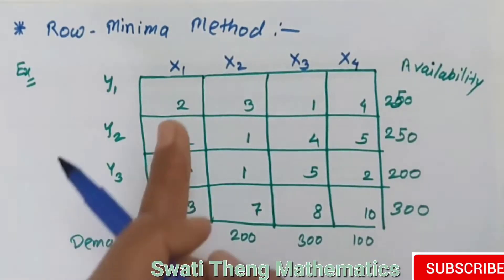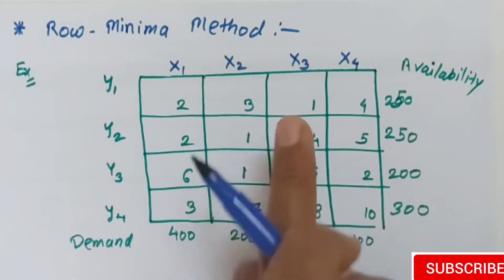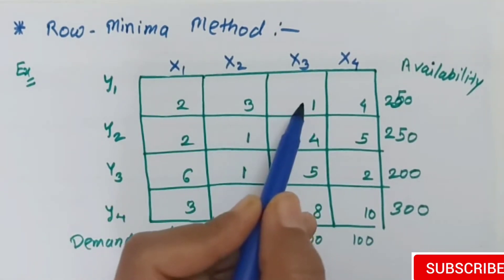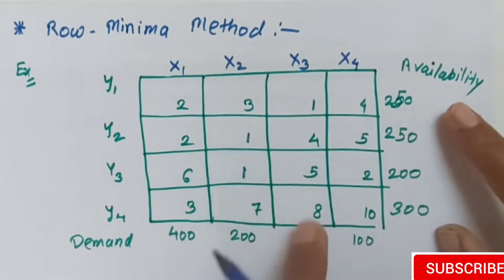In the row minimum method, we have to select the first row and check the minimum value. Here, 1 is the minimum value in the first row, so we assign this.